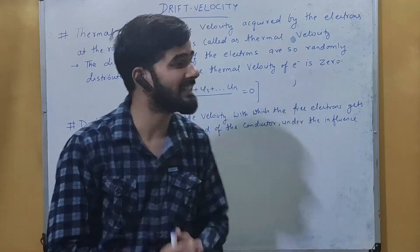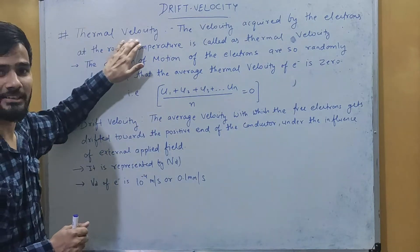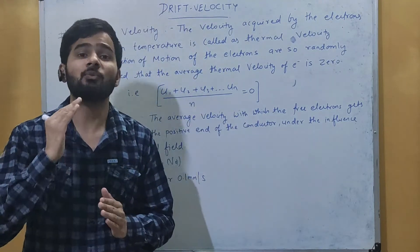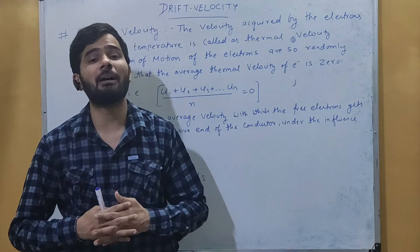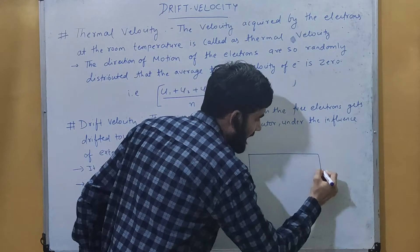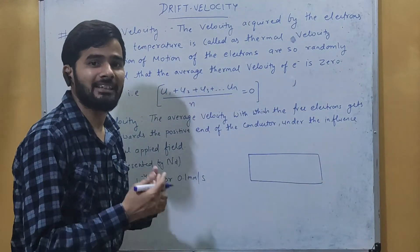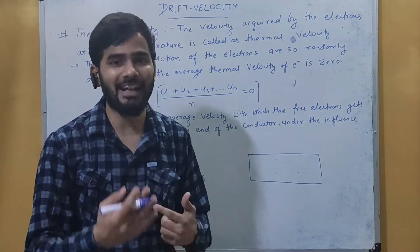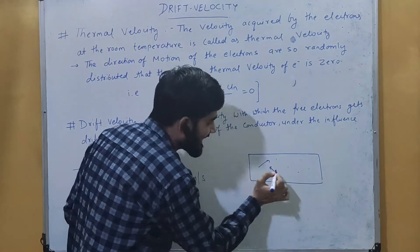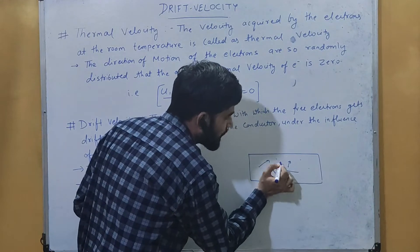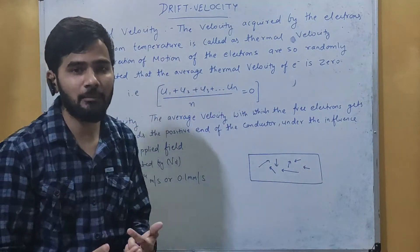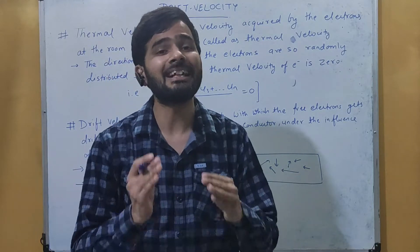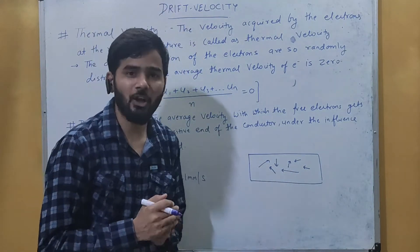As the name suggests, thermal velocity is the velocity acquired due to temperature — specifically, the velocity acquired by free electrons. If we have any material, at room temperature there will be some free electrons. At room temperature these free electrons move randomly: one will move in this direction, another in this direction, and so on. So the velocity acquired by free electrons at room temperature is called the thermal velocity.